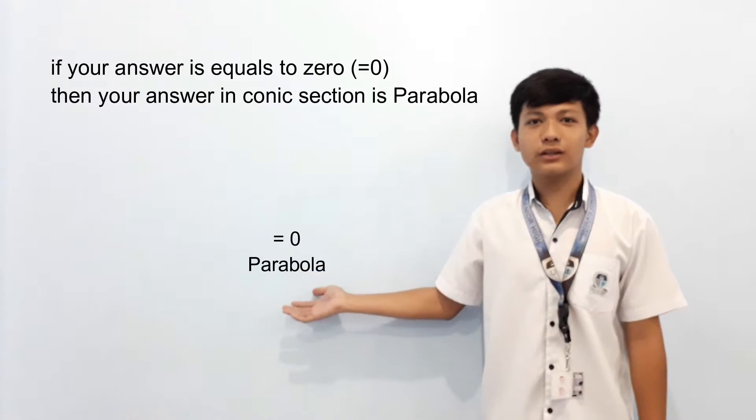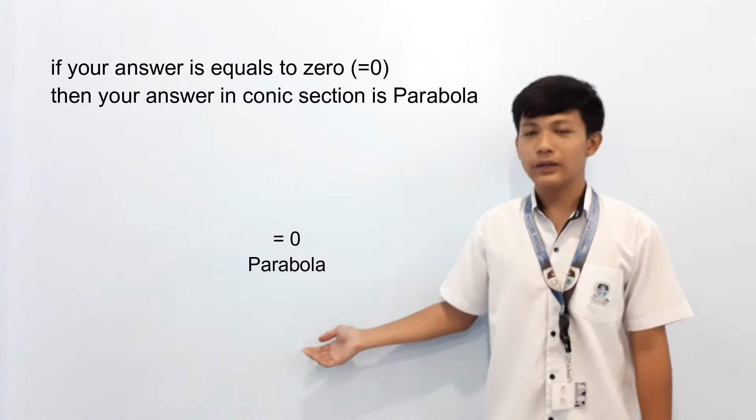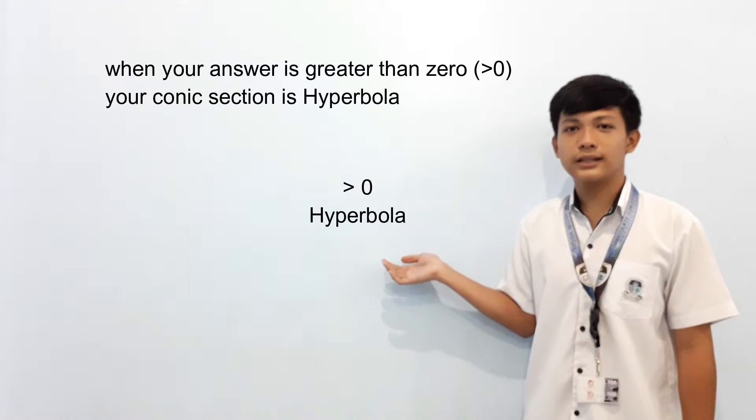So, if your answer is equal to zero, then your conic section is parabola. When your answer is greater than zero, your conic section answer is hyperbola.